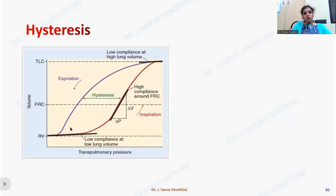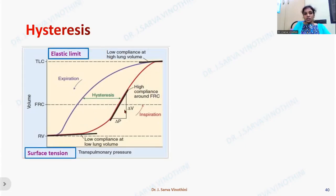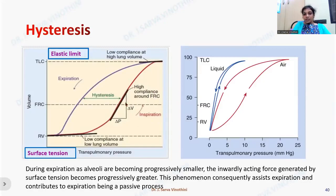The pressure-volume loop of a healthy lung also shows hysteresis — less pressure is required to hold the alveoli for the same tidal volume during expiration compared to inspiration. This is due to surfactant and the elastic recoil capacity of the lung. Compliance is low at lower lung volumes because of increased surface tension, and also low at higher lung volumes because the elastic stretchability is exhausted. Hysteresis is not present in a liquid-filled lung because there is no air-surfactant interface.